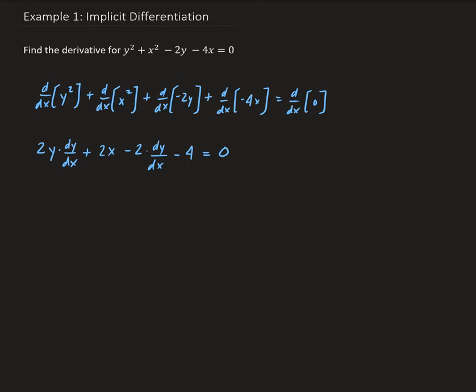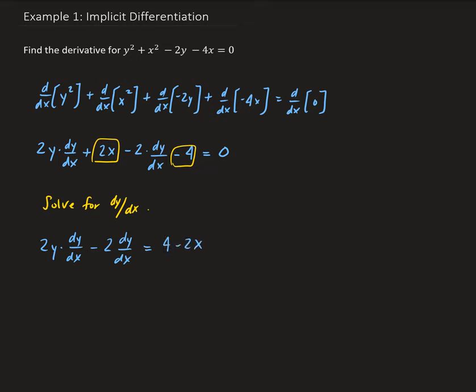From here we need to solve for dy/dx. We're going to put all the terms without dy/dx on the other side. So we take 2x and the minus 4 to the other side, giving us 2y times dy/dx minus 2 times dy/dx equals 4 minus 2x. From here we can factor out dy/dx.